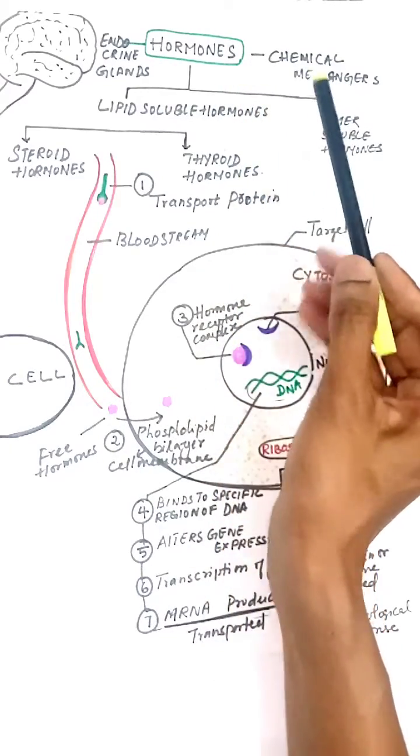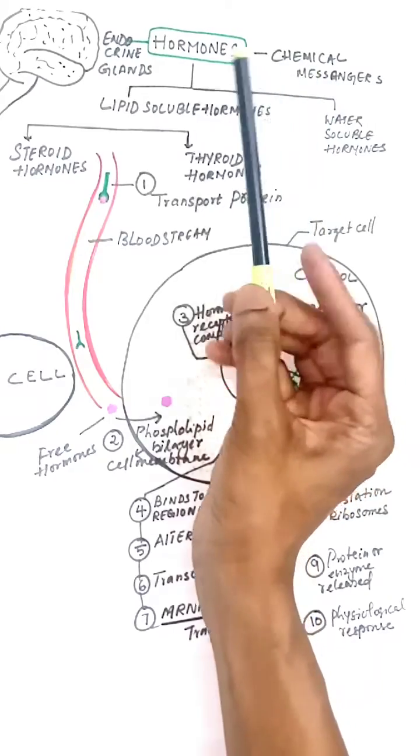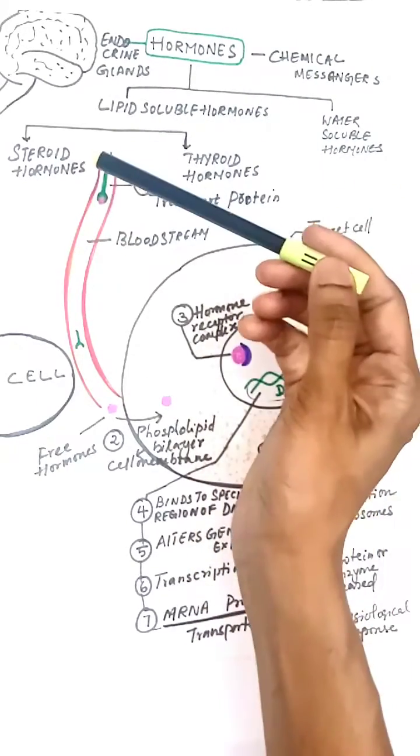Hormones are the chemical messengers of the body. They are secreted by a group of cells called endocrine glands. These chemical messengers control the whole process of the body.